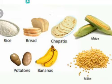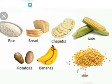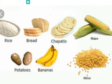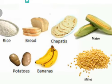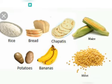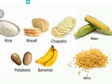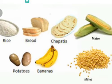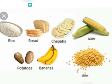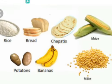Cheese, curd, and ice cream are made from milk, which is an animal product. We eat chapatis, rice, bread, cheese, and butter to get energy — energy to work and play. Milk, eggs, pulses, meat, and fish help us to grow and make us strong.